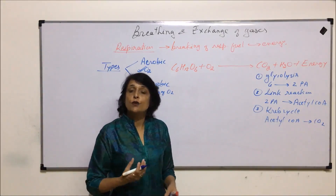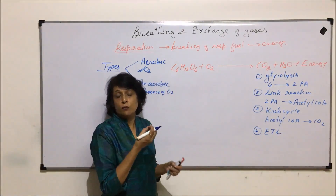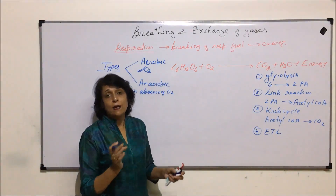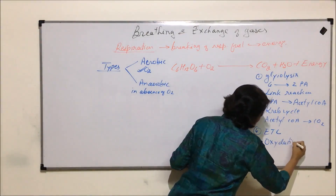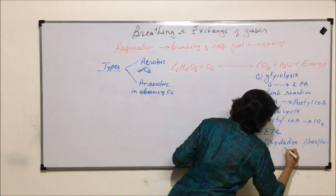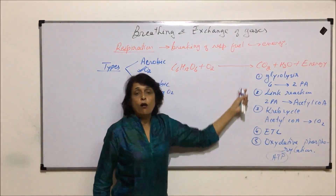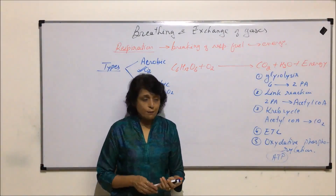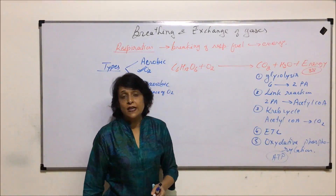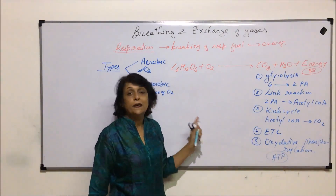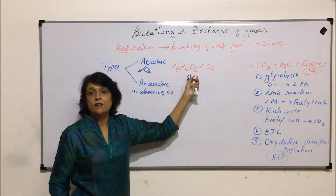In all these processes we keep getting NADH₂, which is the molecule that will give us ATP. Then the electron transport chain takes place, where NADH is broken down, electrons run down the gradient, pushing protons into the mitochondrial outer space. The fifth step is oxidative phosphorylation, where the bulk of ATP production takes place. The total energy obtained is around 38 ATPs, but 2 are used up, so the net yield is 36 ATPs.